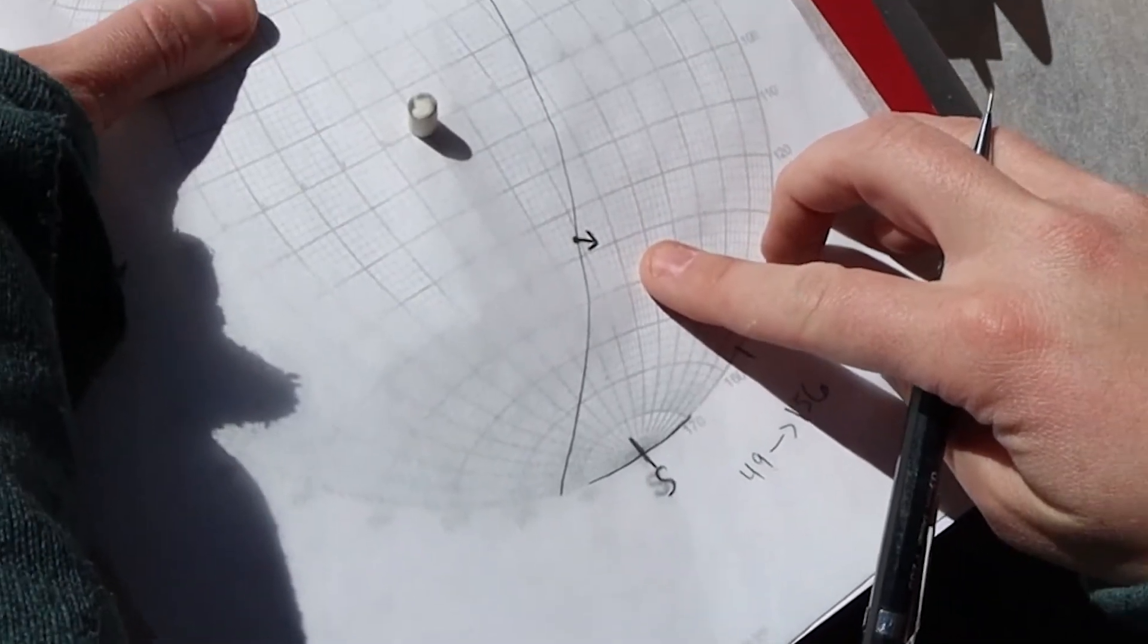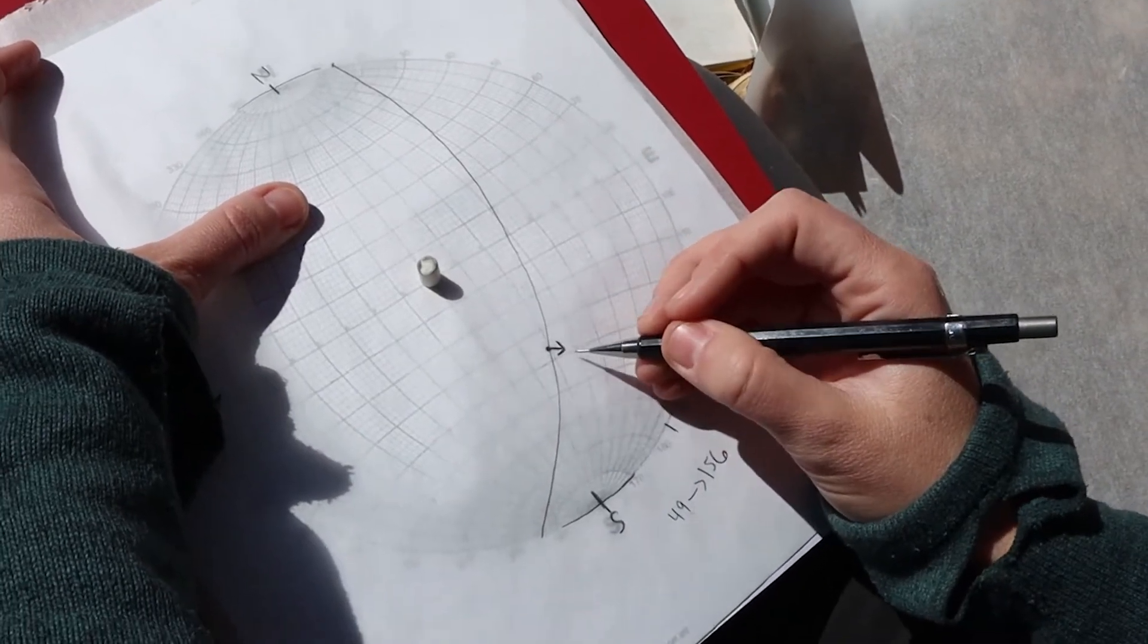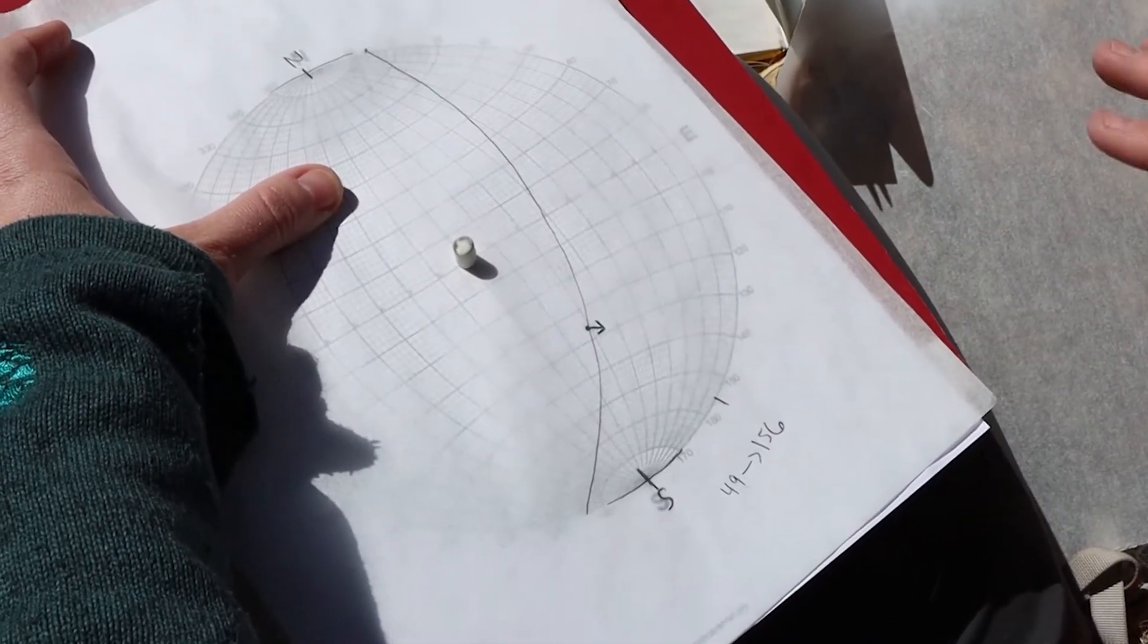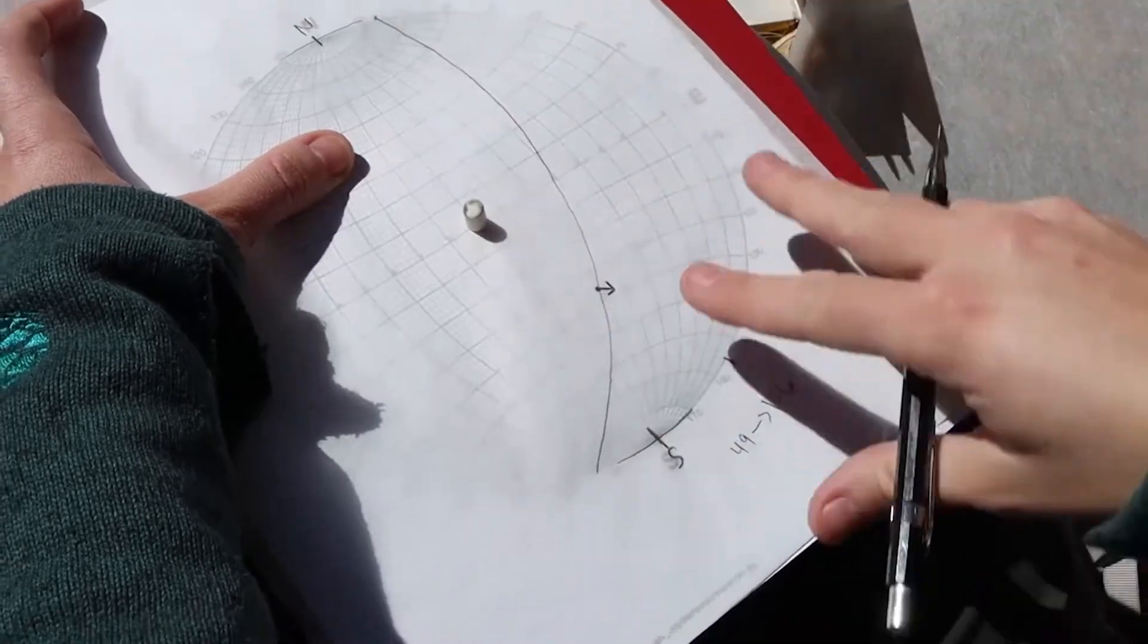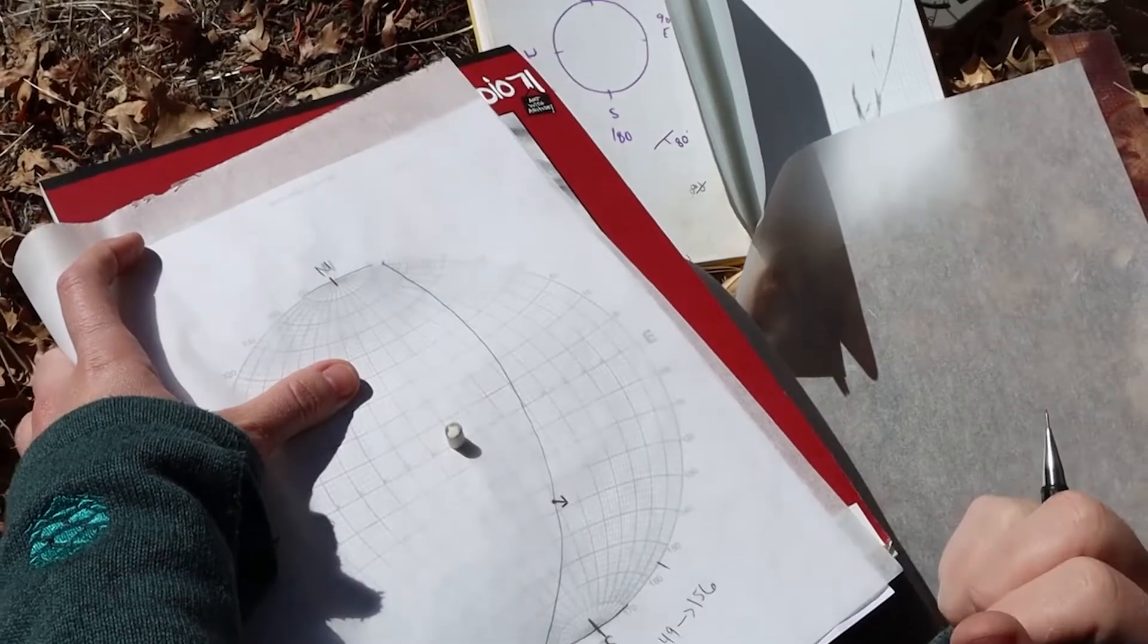This is the fault plane, this is the lineation, and that's the direction it was moving. So just these things on my stereonet is telling me everything I need to know about that fault surface.